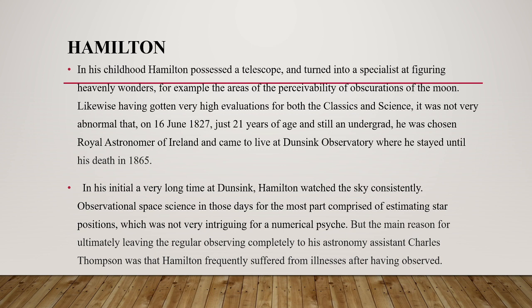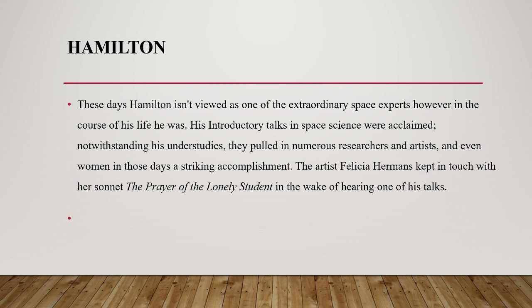On 16 June 1827, at just 21 years of age and still an undergraduate, Hamilton was chosen as Royal Astronomer of Ireland and came to live at Dunsink Observatory, where he stayed until his death in 1865. In his early years at Dunsink, Hamilton observed the sky consistently. Observational astronomy mostly consisted of measuring star positions, which was not very interesting for a mathematical mind. The main reason he eventually left regular observing entirely to his assistant Charles Thompson was that Hamilton frequently suffered from illness after observing. As a result, he is not considered one of the great practical astronomers.